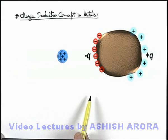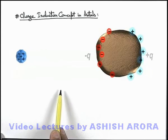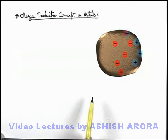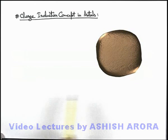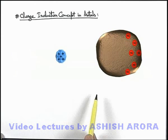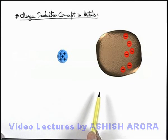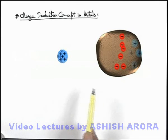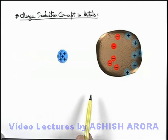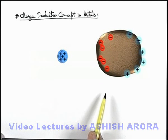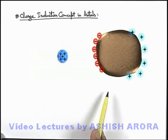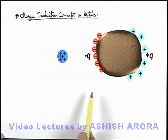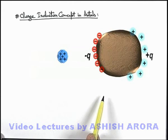Now in this situation if we remove this positively charged body, you can see that the body will again become electrically neutral. And if it is again brought close, we can say that again charge separation will take place due to migration of electrons from the rear surface to the front surface. These charges which are developed due to migration of electrons — minus q-i and plus q-i — are called induced charges on the surface of this body.